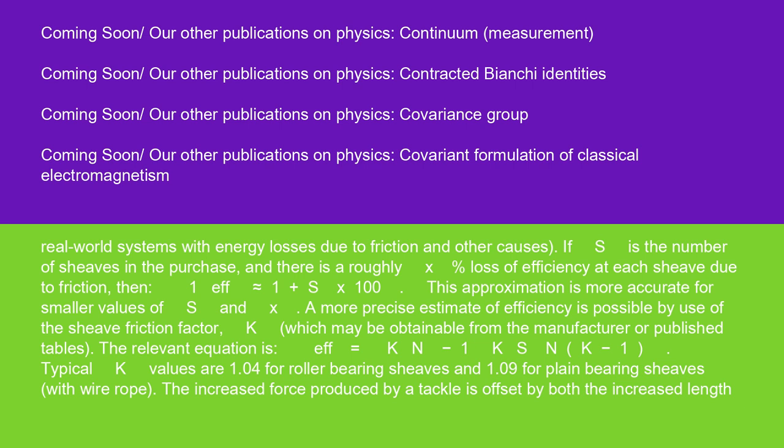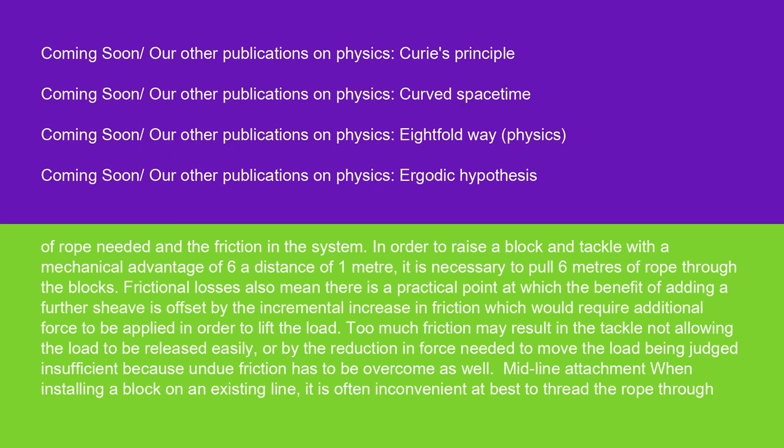The increased force produced by a tackle is offset by both the increased length of rope needed and the friction in the system. In order to raise a block and tackle with a mechanical advantage of 6 a distance of 1 meter, it is necessary to pull 6 meters of rope through the blocks. Frictional losses also mean there is a practical point at which the benefit of adding a further sheave is offset by the incremental increase in friction, which would require additional force to be applied in order to lift the load. Too much friction may result in the tackle not allowing the load to be released easily, or by the reduction in force needed to move the load being judged insufficient because undue friction has to be overcome as well.